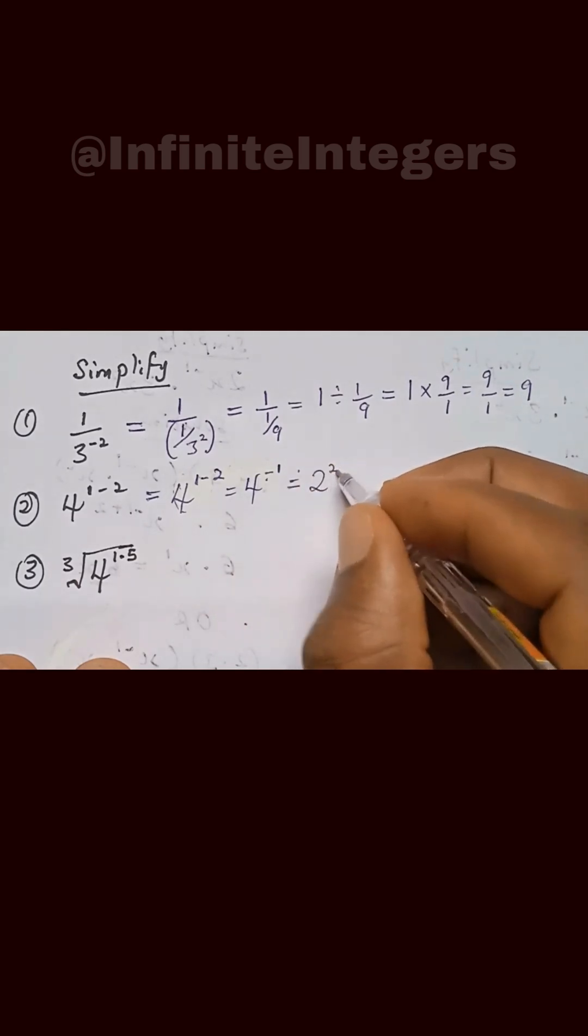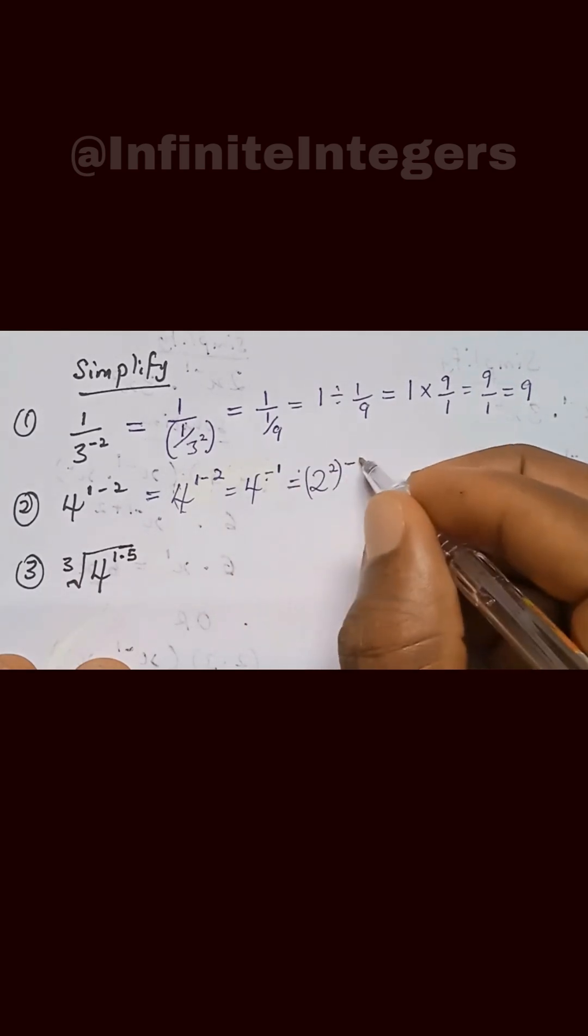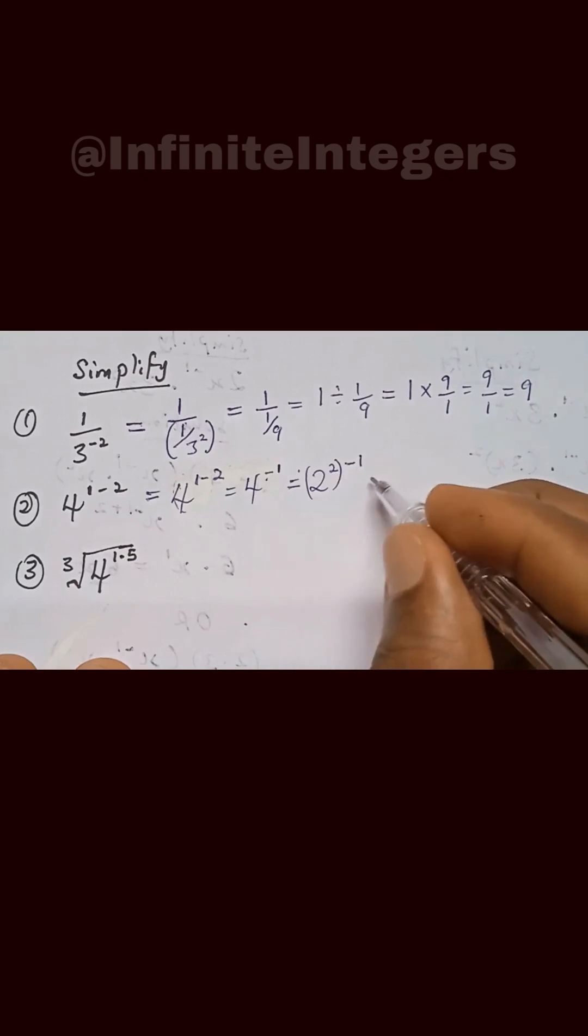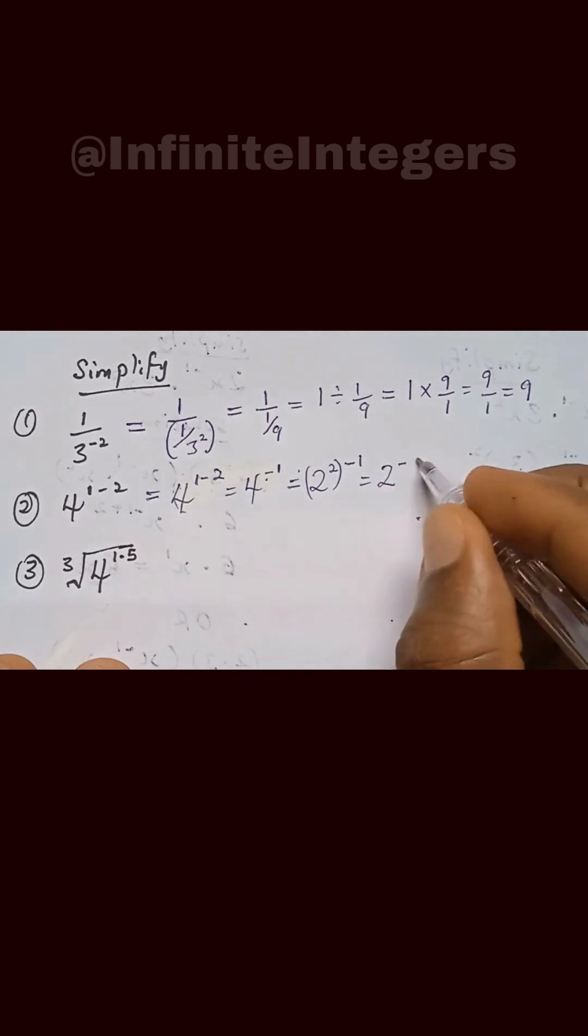We have 2 power 2, then power minus 1. To multiply by power minus 1, we have 2 raised to power minus 2. That can be written as 1 over 2 raised to power 2, which equals 1 over 4.